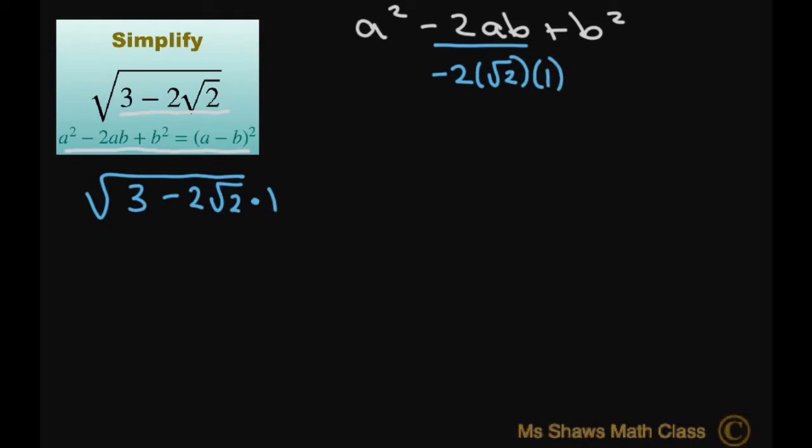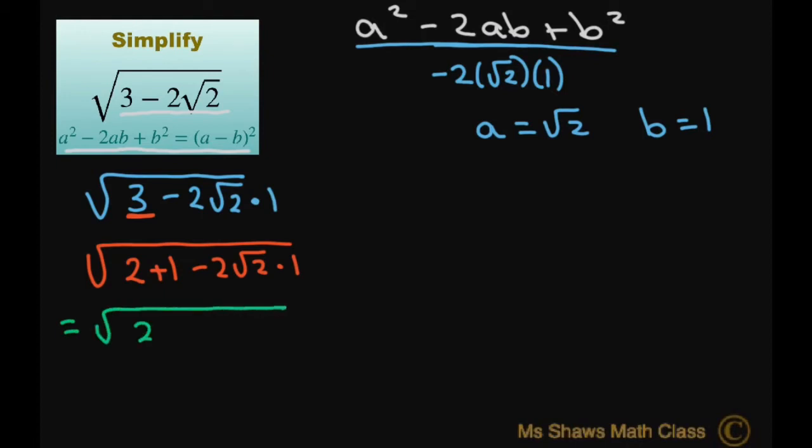Therefore, if I want to write it in this format, my a equals square root of 2 and my b equals 1. So to do that, what I'm going to do is rewrite this as square root of 2 plus 1 minus 2 square root of 2. Go ahead and put the times 1 and rearrange this as square root of 2 minus 2 square root of 2 plus 1.